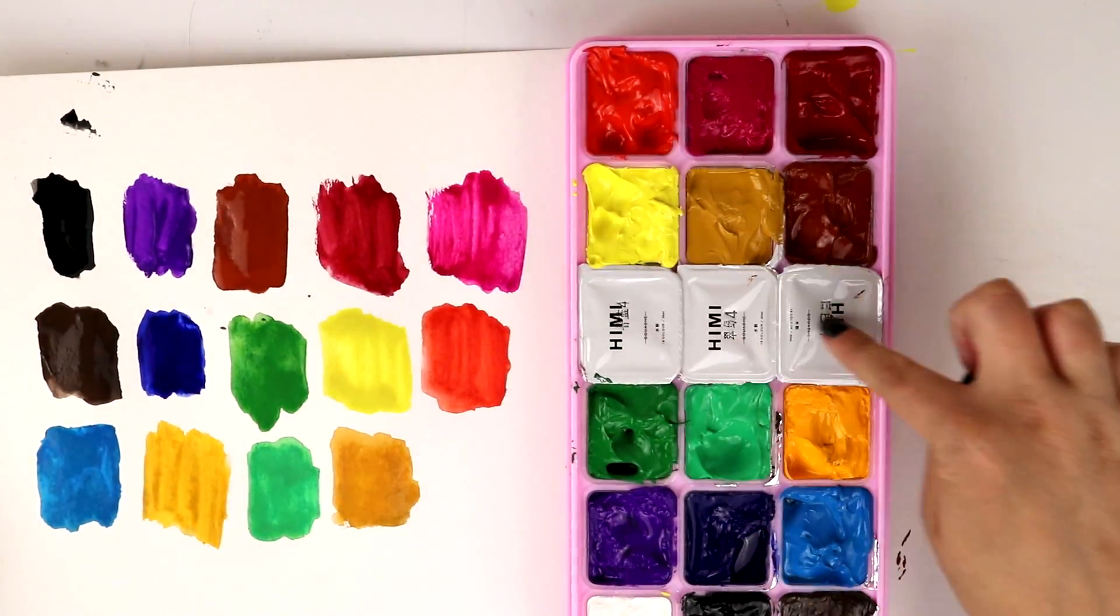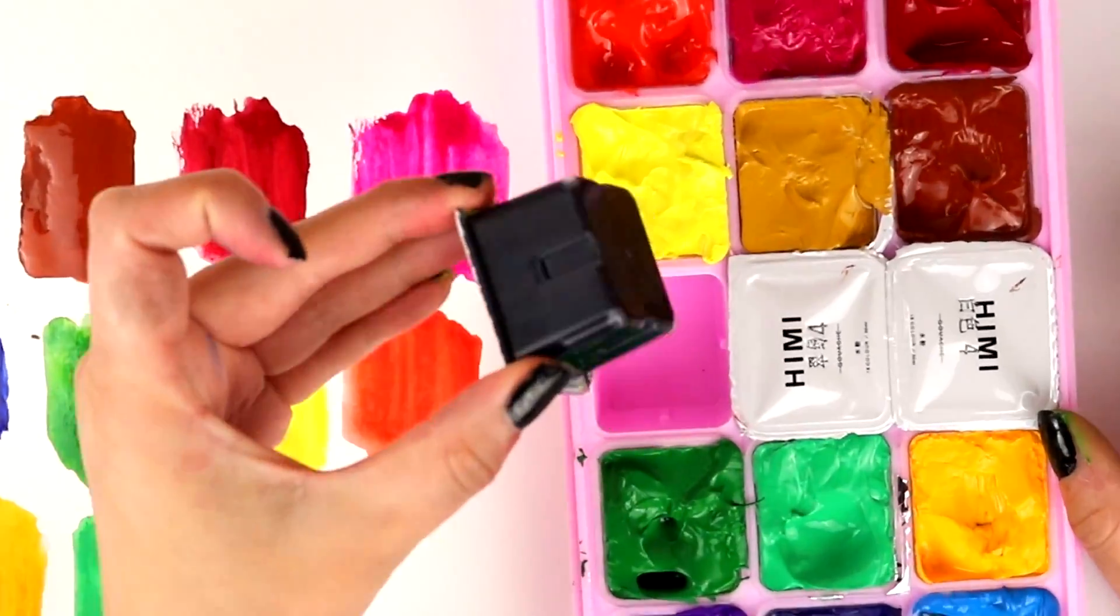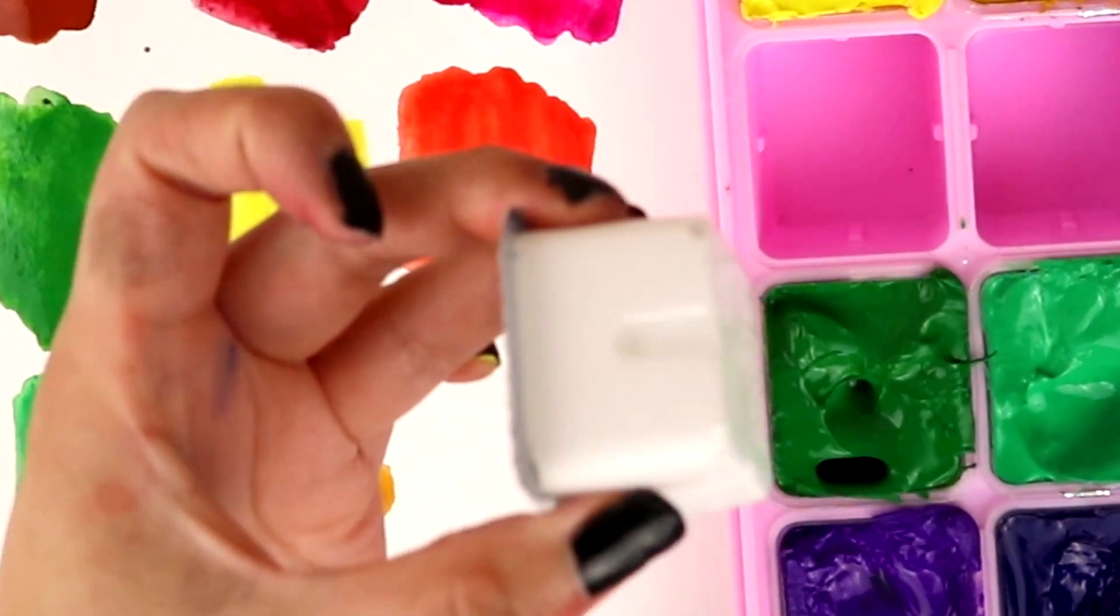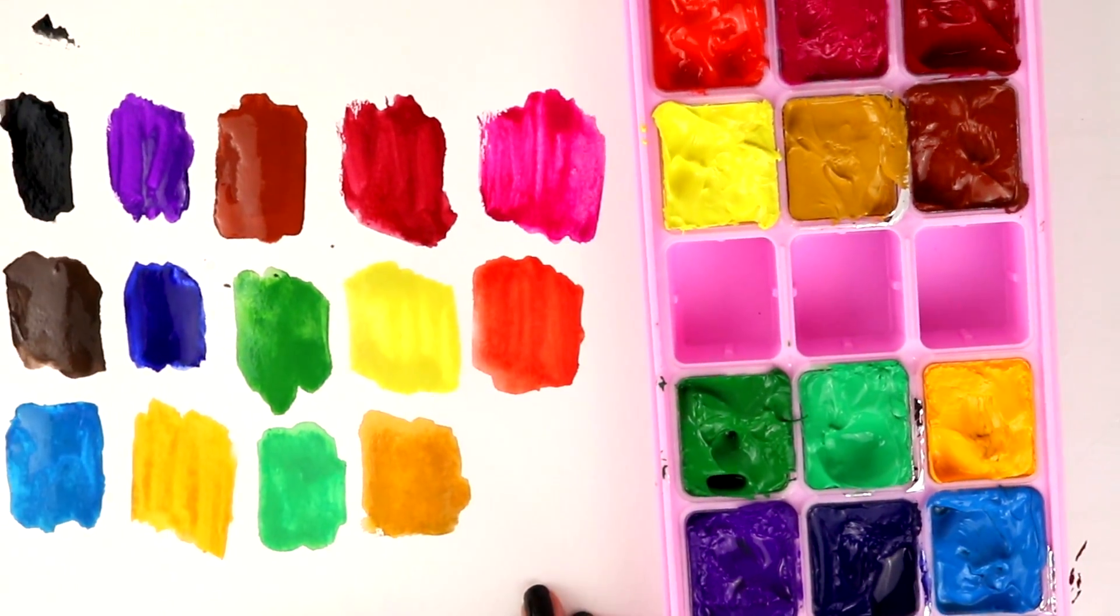Now, you're probably wondering what these three colors were that I didn't swatch. One's the black, one is a blue-green, and then lastly is white, which I mean, what's the point of swatching on white paper, you know?